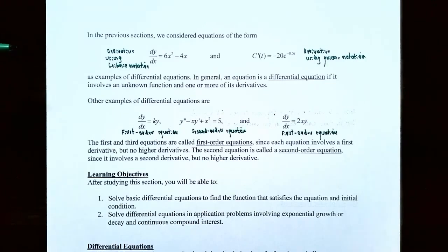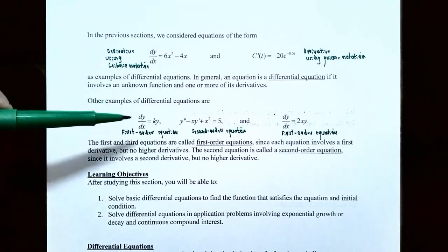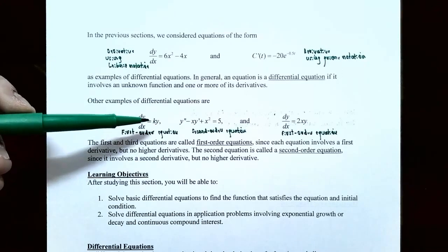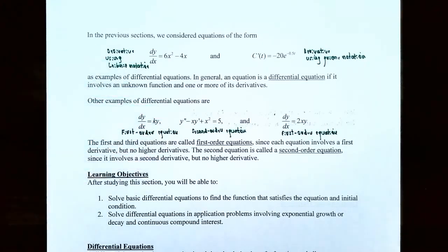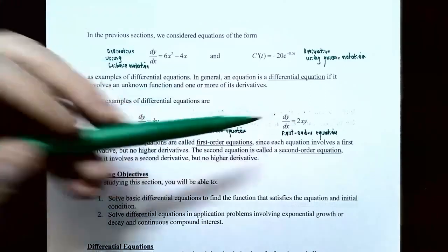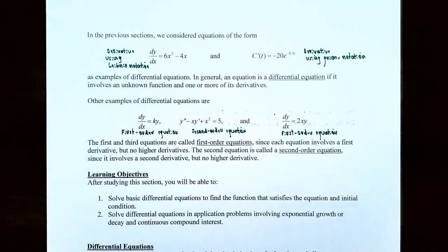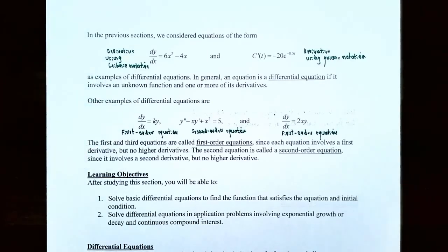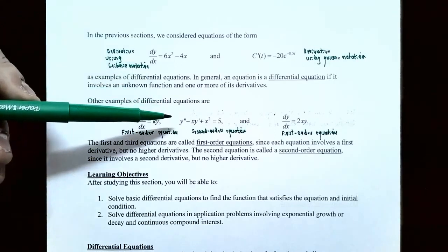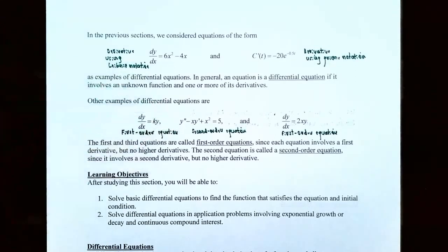Other examples of differential equations include dy/dx equals some constant k times y, or y double prime subtract x times y prime plus x squared equals 5, and dy/dx equals 2xy. This first equation is called a first order equation because it involves the first derivative, whereas the second equation involves y double prime, so it's called a second order equation. This last one involves just the first derivative, so it's also a first order equation.